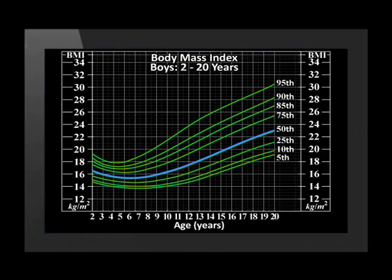We will now take a look at a growth chart for males between the ages of 2 and 20. We can see the ages running from left to right along the bottom of the chart, and the BMI readings on the left and right of the chart running vertically upwards. The chart consists of a series of lines labeled from the 5th percentile at the bottom to the 95th percentile at the top. The darker line in the middle is known as the 50th percentile line, which is the preferred average BMI for boys between the ages of 2 and 20.